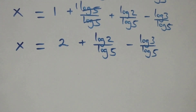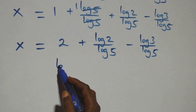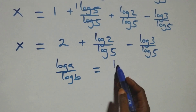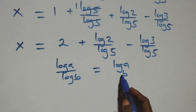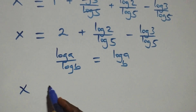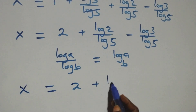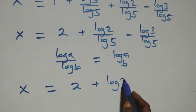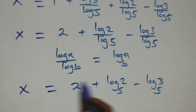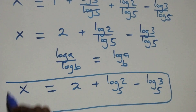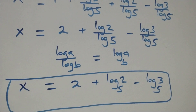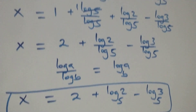We apply the change of base rule: log a over log b is the same as log a to base b. So x equals 2 plus log 2 base 5 minus log 3 base 5.